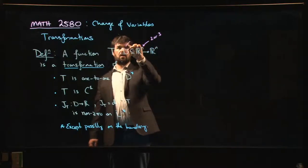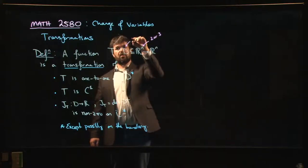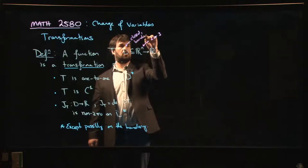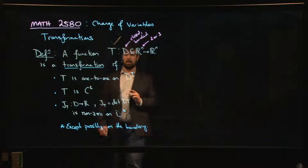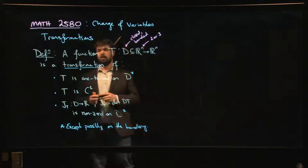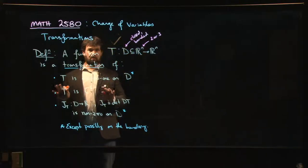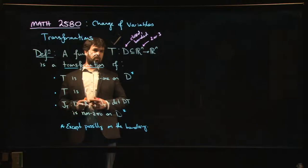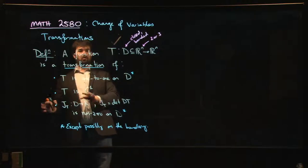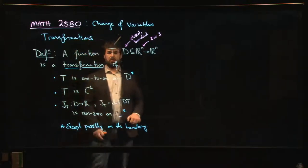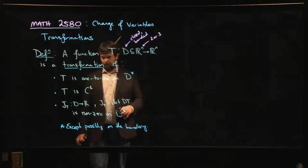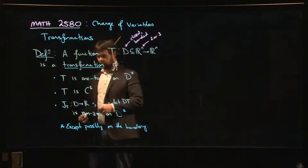The region D that we're working over generally is going to be closed and bounded. So it's a closed bounded region, the type that you might try to integrate over. And what we do in a change of variables, we apply the transformation to this domain D and T is going to take the domain D and it's going to turn it into another region, typically more complicated than the one that we started with.